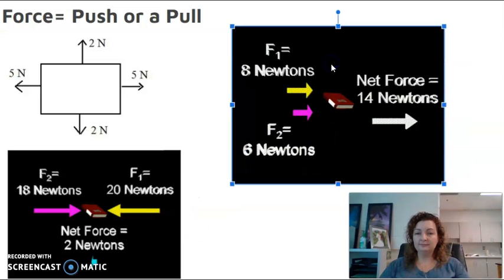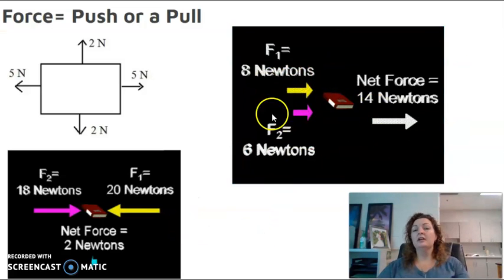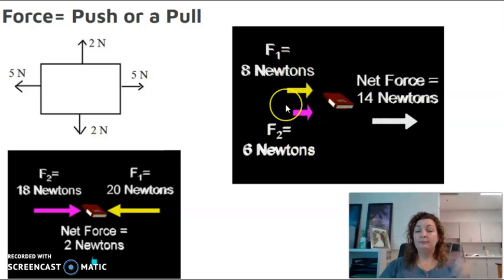If you look at this one, you can see we have a book again and we have two forces and they're both going to the right. One's 8 Newtons and one's 6 Newtons. All we have to do there is add them up because they're in the same direction. Once we add those up, it gives us 14 Newtons. Because they're both going to the right, it's still going to the right as well.